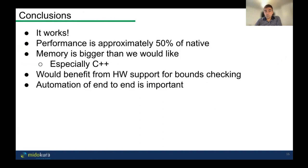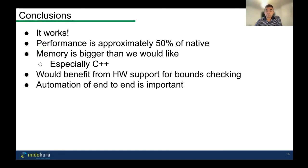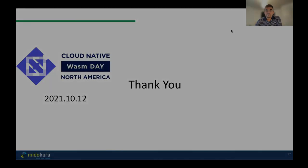In conclusion, it works. Performance is approximately 50% of native code, which we hope will improve. Memory footprint is bigger than we'd like, especially for C++. At some point we'd benefit from hardware support for bounds checking, but it's still okay for now. Automation of the end-to-end pipeline is very important. I hope you enjoyed my talk — thank you very much.